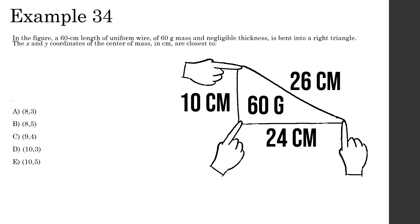In the figure, a 60-centimeter length of uniform wire weighing 60 grams and of negligible thickness is bent into a right triangle. The x and y coordinates of the center of mass in centimeters are closest to which answer? Since the wire is uniform, we proportionally find how much mass is in each side of the triangle.